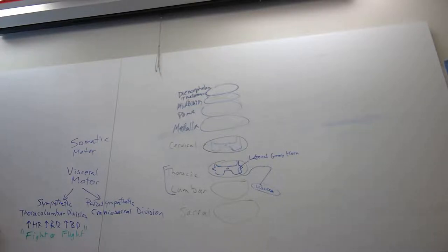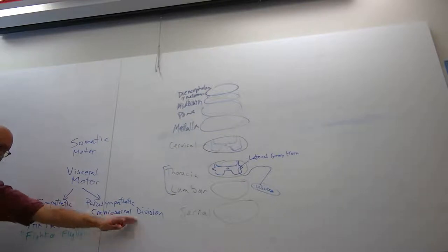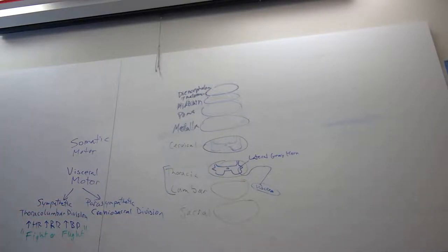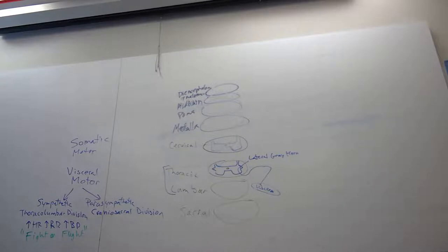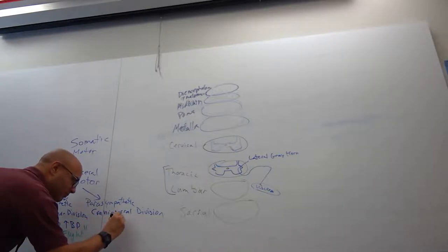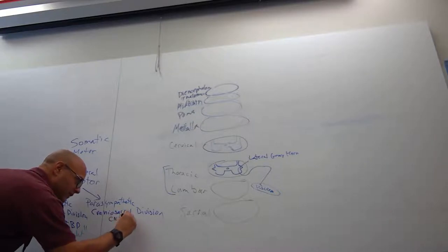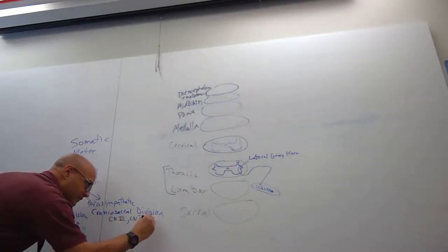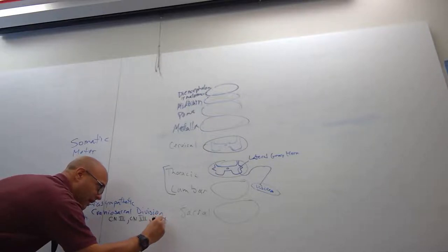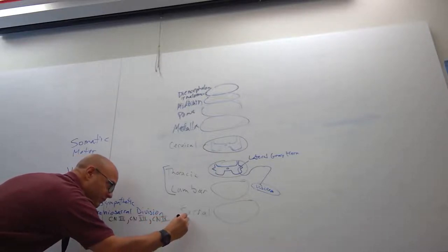Parasympathetic is craniosacral. What's coming out of the cranium to go to organs — not skeletal muscle? Cranial nerves three, seven, nine, and ten.